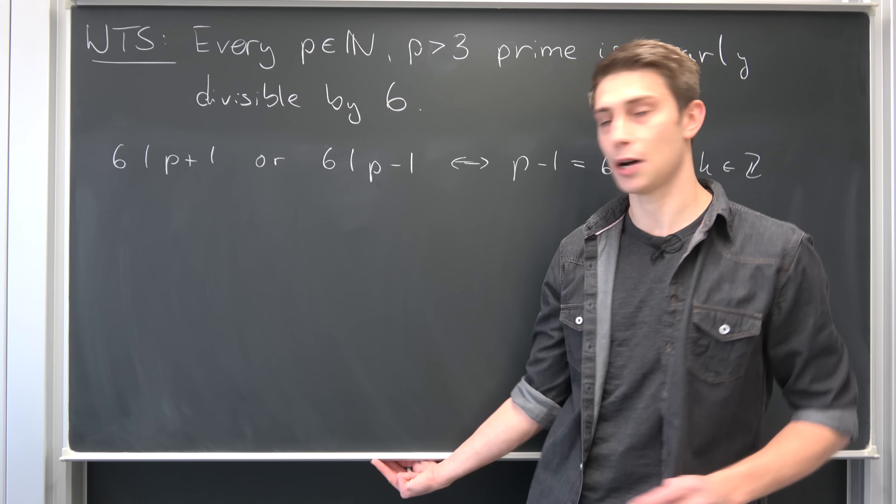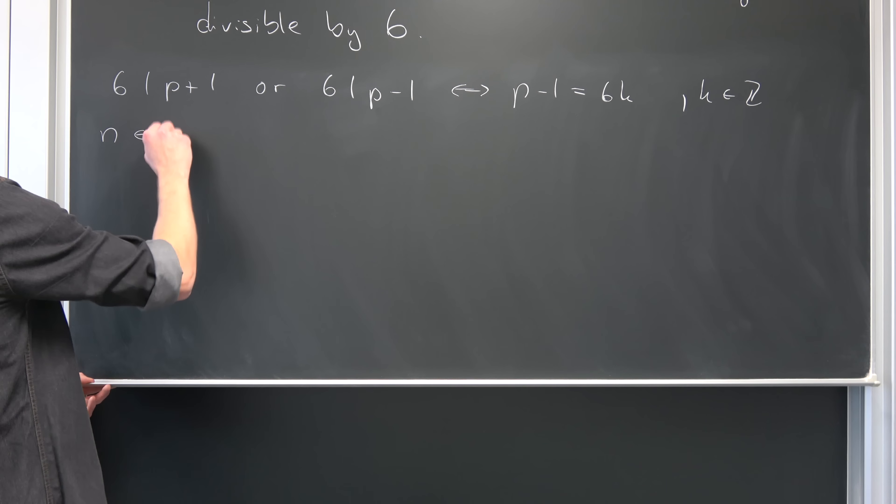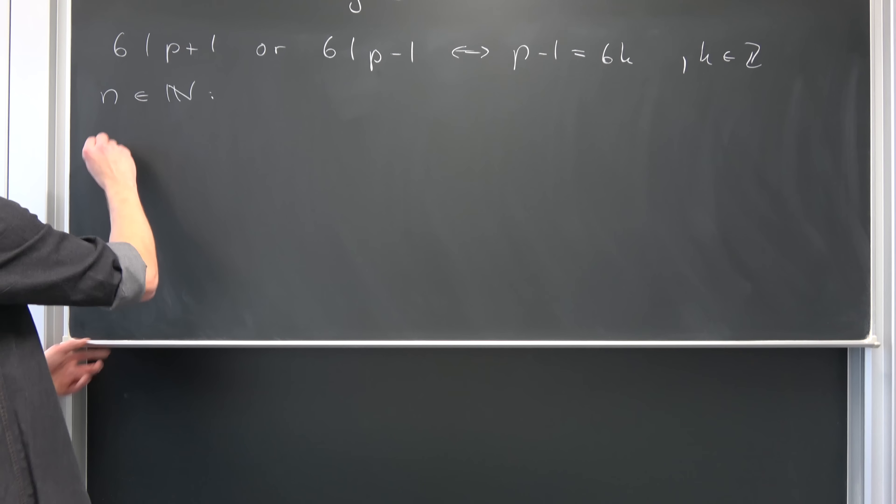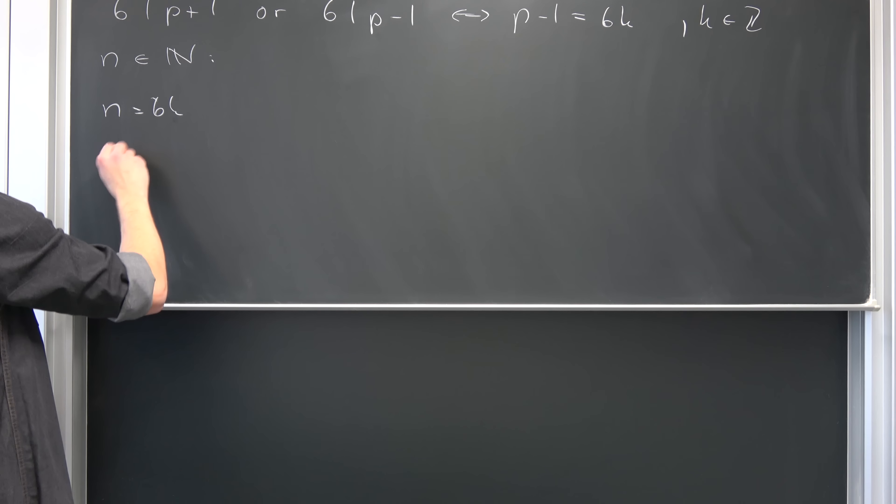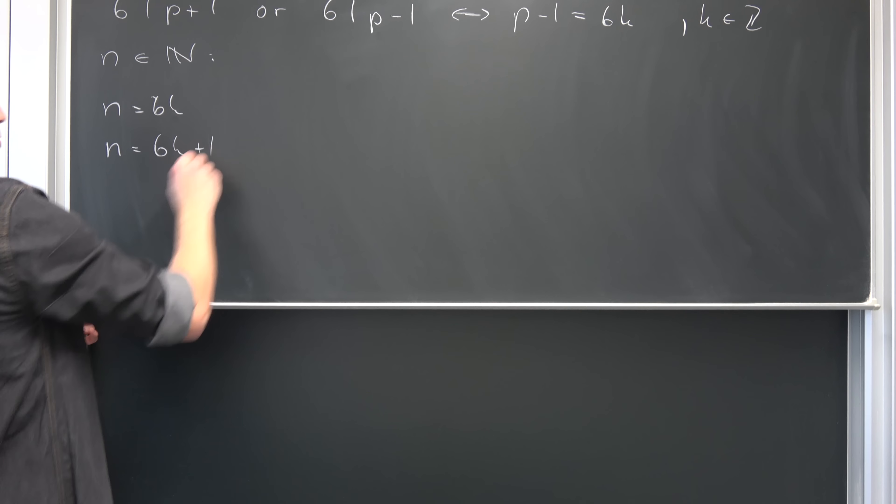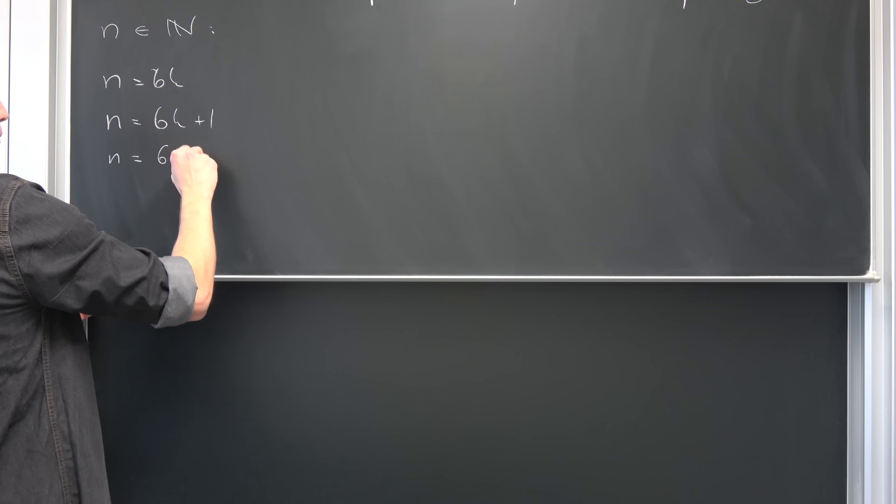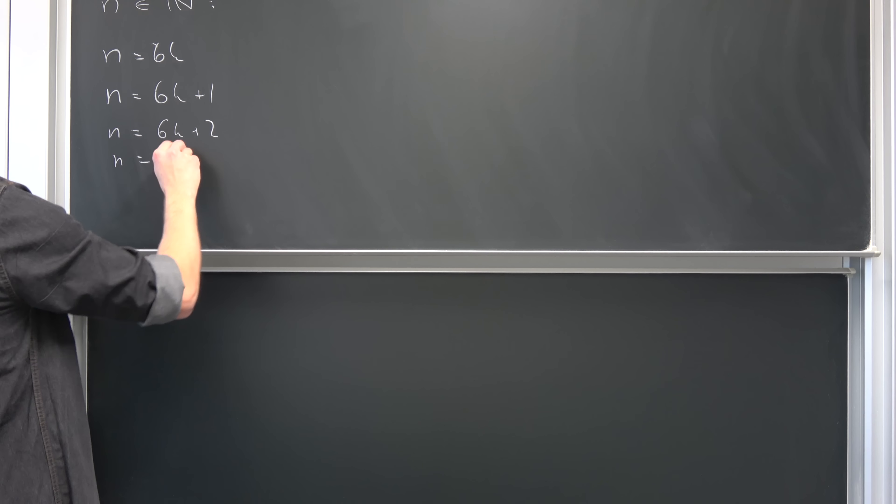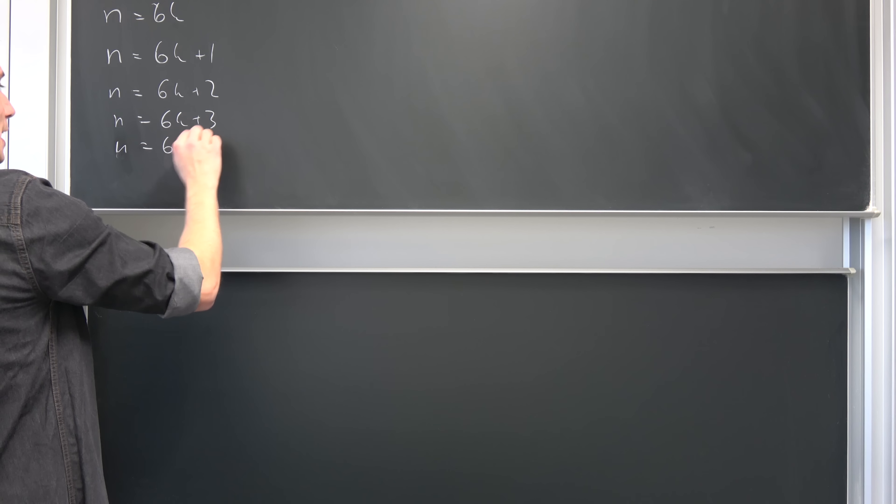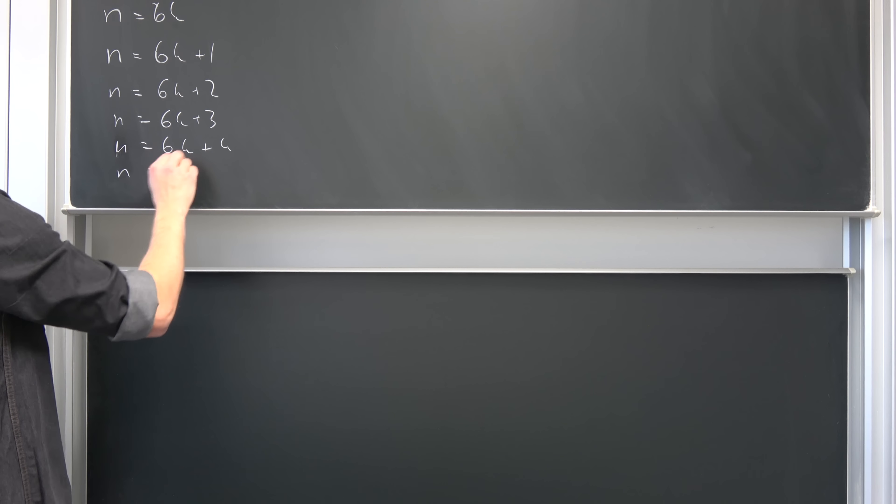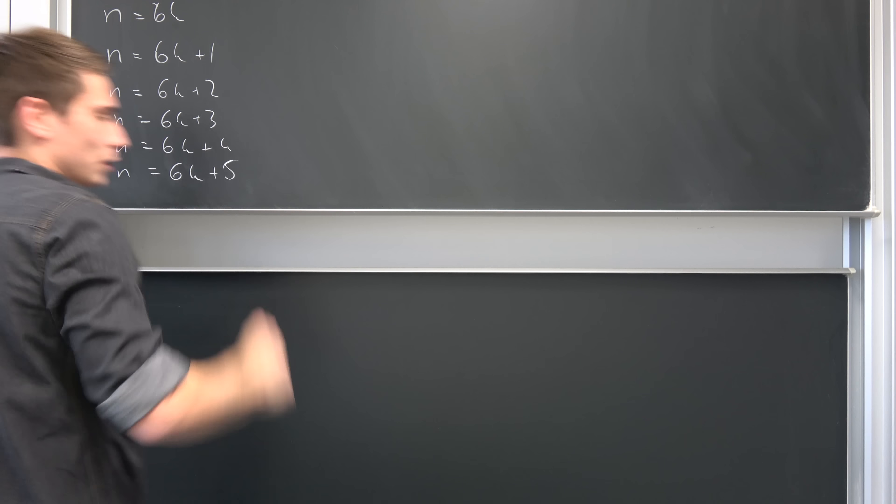Let's write all the cases out in mathematical terms. Consider some n element of natural numbers. It can be either 6 times k, so divisible by 6, or n equals 6k plus 1, plus 2, 6k plus 3, n equals 6k plus 4, or n equals 6k plus 5.